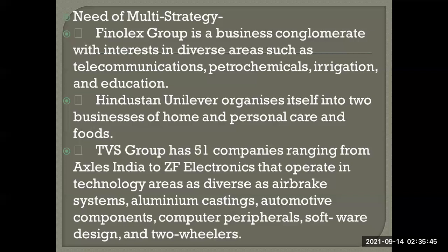The TVS Group has 51 companies ranging from Axels India to JF Electronics, operating in diverse technology areas such as air brake systems, aluminum casting, automotive components, computer peripherals, software design, and two-wheelers. TVS Group's problems cannot be solved by just a corporate level strategy — there has to be a strategic business unit level strategy and a functional level strategy as well.